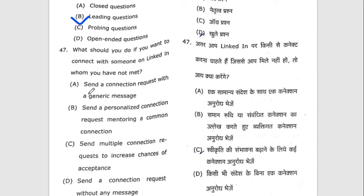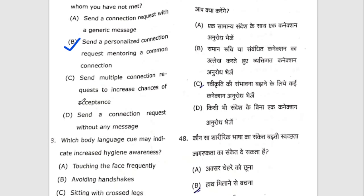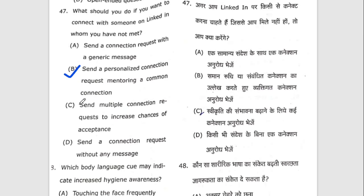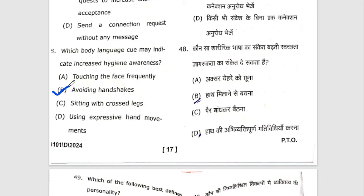Forty-seventh question: what should you do if you want to connect with someone on LinkedIn whom you have not met? The right option is B — send a personalized connection request mentioning a common connection. Forty-eighth question: which body language cue may indicate increased hygiene awareness? The right option is B — avoiding handshakes.